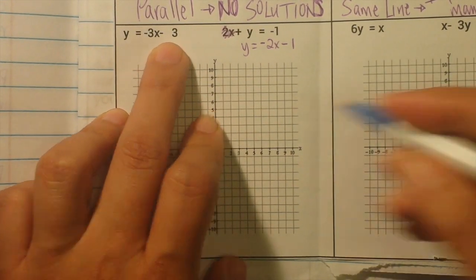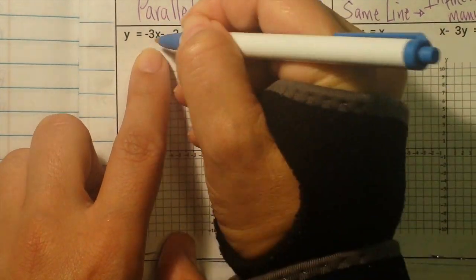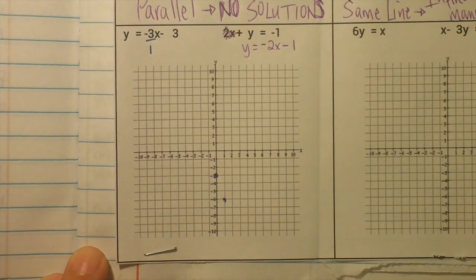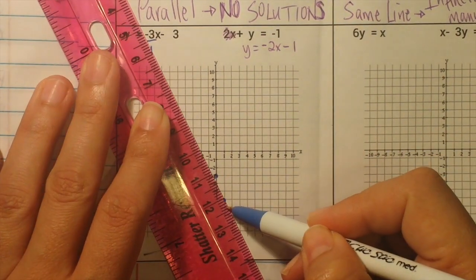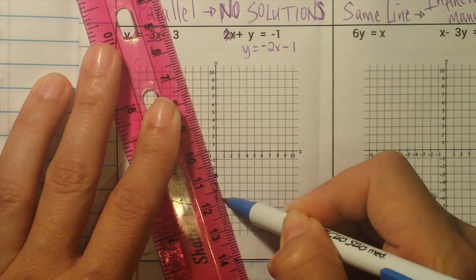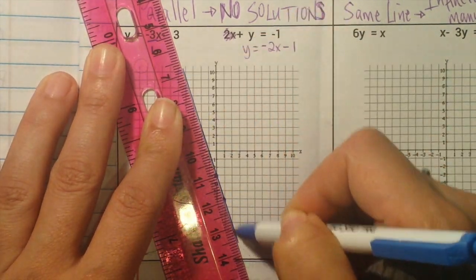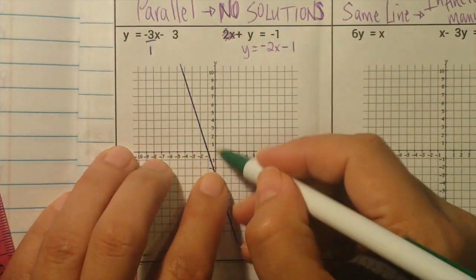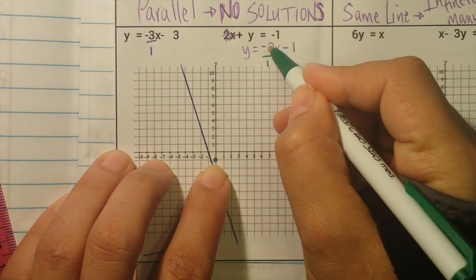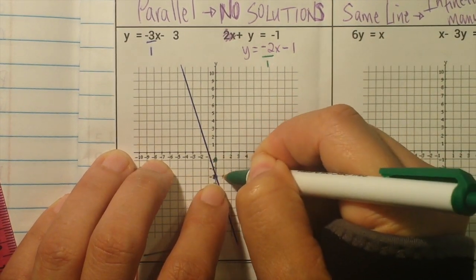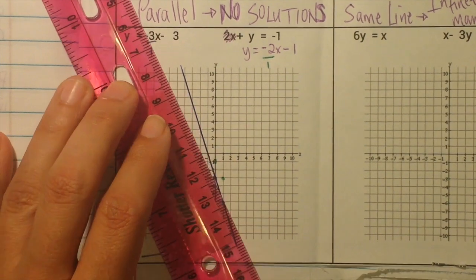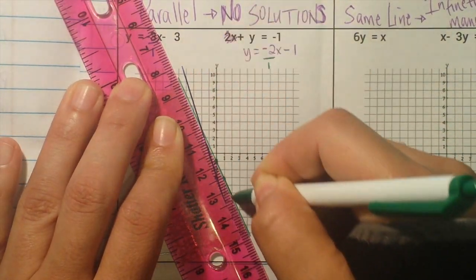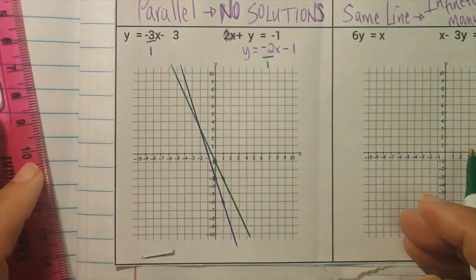Start the first line at negative 3. Rise over run — put a 1 under it — so go down 3, right 1. Take a ruler or your student ID card and draw a straight line. Then take a different color for the second line. This time the y-intercept is negative 1, and the slope is negative 2 over 1, so go down 2, right 1. Be very precise because the intersection of the two lines is your answer.